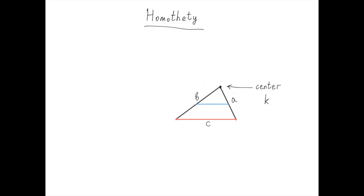Let's see what happens if k equals 1. In this case, essentially nothing changes — in other words, all points are fixed and all distances remain the same. Now let's track where point b goes for different values of k. For k equals 1, point b stays here. For k equals 1.5, it goes somewhere here. For k equals 0.5, it goes here. For k equals 0.25, it's maybe somewhere around here. Thus, for k equals 0, it makes sense to assume that point b goes to the center, and every other point collapses there at the center of the homothety. This is why when defining a homothety, we assume that k is not equal to 0.